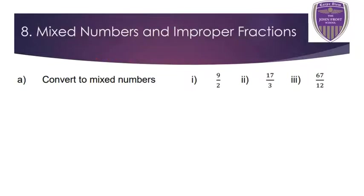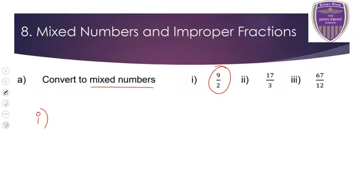Now we need to convert improper fractions — fractions with the top bigger than the bottom — into mixed numbers. For 9 over 2, that means 9 divided by 2. We need to see how many whole 2s go into 9 — counting up in 2s, the closest without going above 9 is 8, which is 4 times 2. So the whole number is 4. The remainder is 1, because 4 times 2 gives 8 and we wanted 9. Write the remainder as your fraction — the answer is 4 and a half.